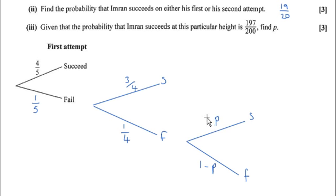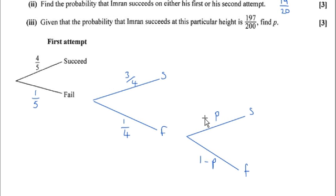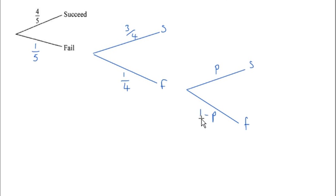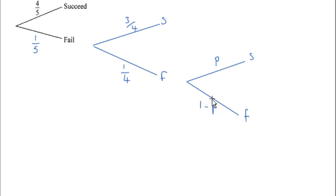So this is kind of a backwards question. They've given us the answer that he succeeds on either his first, second or third try so that we can then calculate what this P value is.